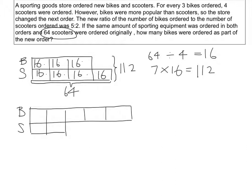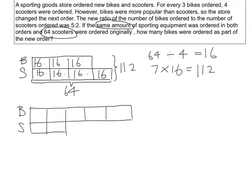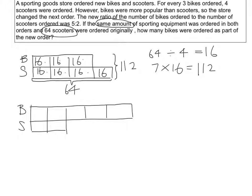Now they said that if the same amount of sporting equipment was ordered in both orders, then the second order should have also a total of 112.